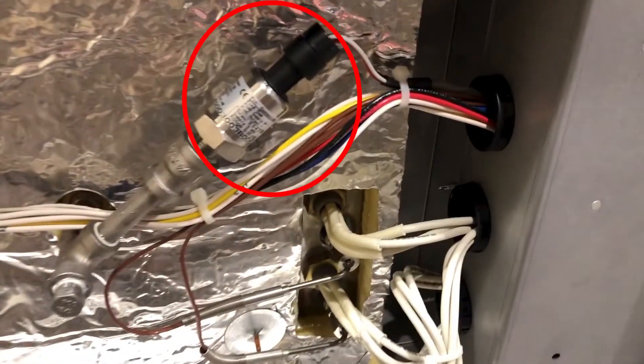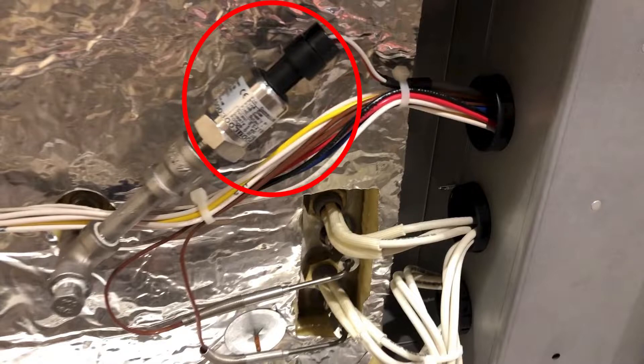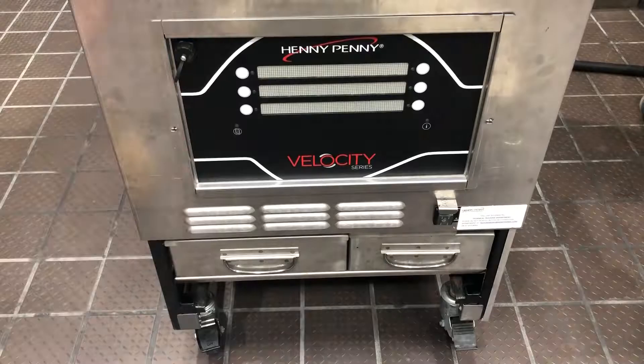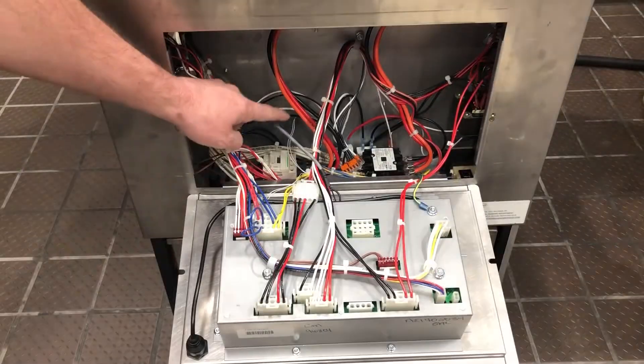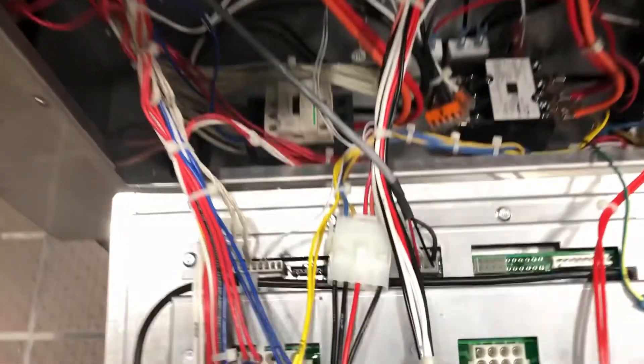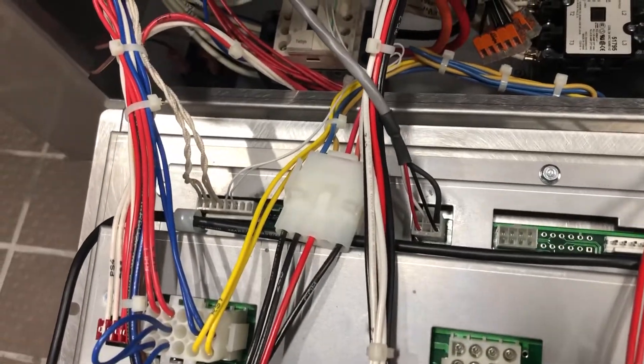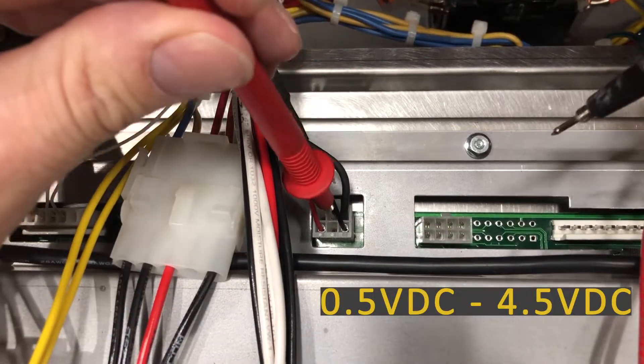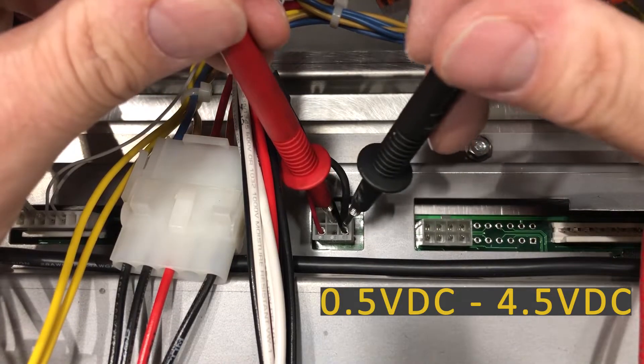The pressure transducer under normal operation has 5 volts DC go into it, and then it fluctuates the voltage back to the control depending on the pressure in the pot. A valid reading from the pressure transducer back to the control is between 0.5 volts DC to 4.5 volts DC.